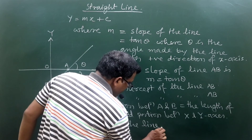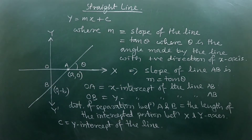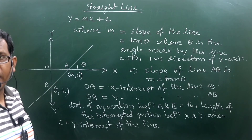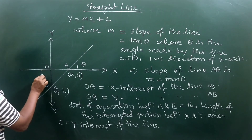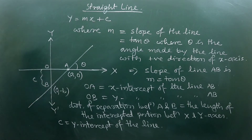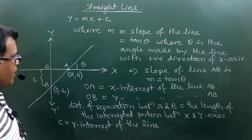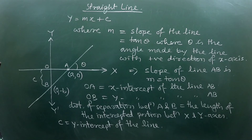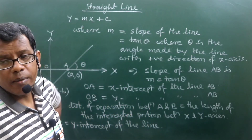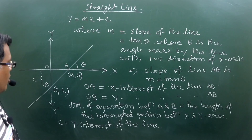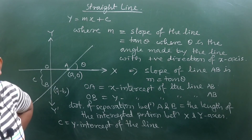The y-intercept is the distance of the point where the line cuts the y-axis. Like here in this diagram, OB will be the value of c, because the line cuts the y-axis at a negative point — that is at B. So the distance OB will be equal to c.